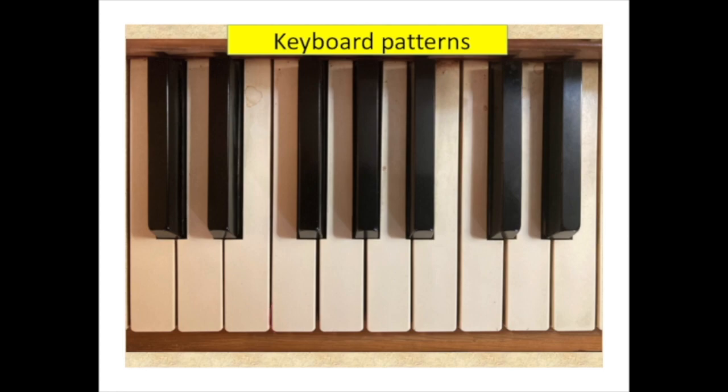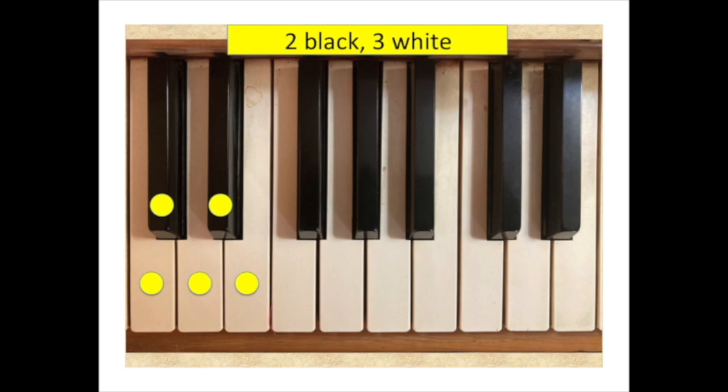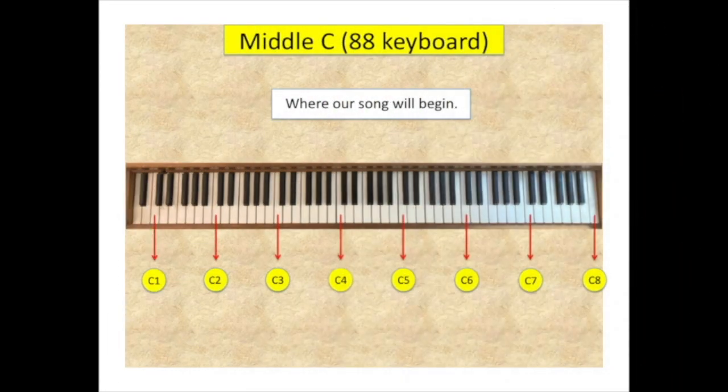The next thing we're going to talk about is keyboard patterns. And if you'll notice, the little yellow buttons are showing one pattern of two black notes and three white notes. And then in the next picture, you see three black notes and four white notes. And this pattern goes all the way across the keyboard, whether it's an 88 keyboard or anything else. Understanding these patterns will help you to find where your fingers go on the keyboard.